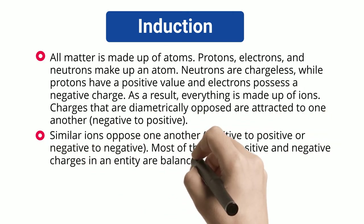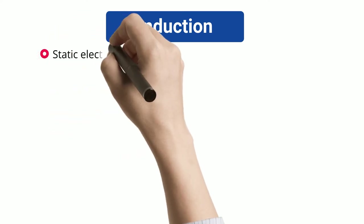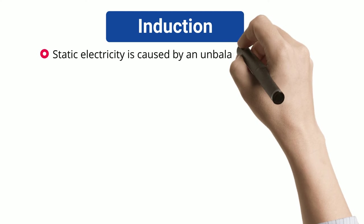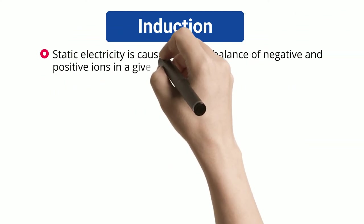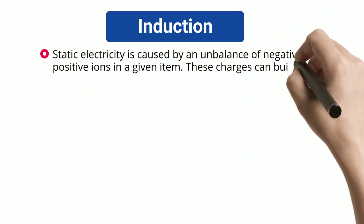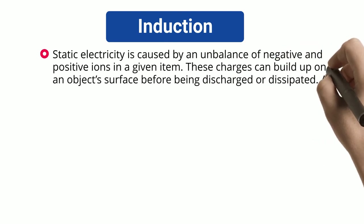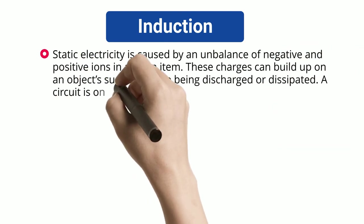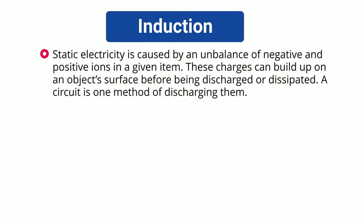Most of the time, positive and negative charges in an entity are balanced, rendering it neutral. Static electricity is caused by an imbalance of negative and positive ions in a given item. These charges can build up on an object's surface before being discharged or dissipated.